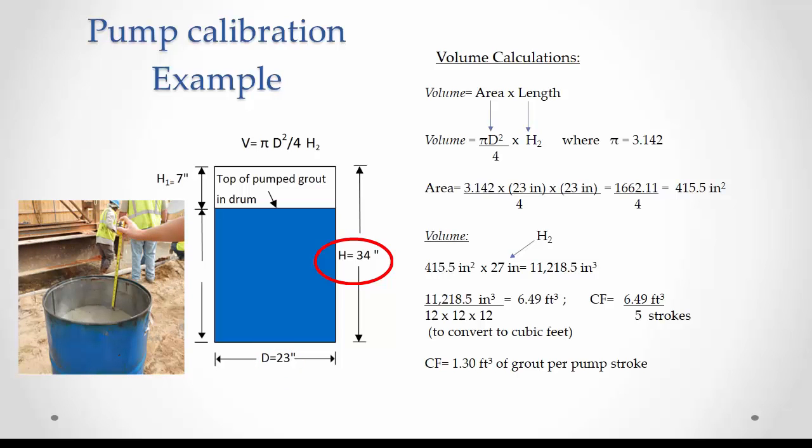At the end of the pumping, he has counted five strokes and the clear distance between the top of the grout and the top of the barrel was 7 inches. Now he can determine H sub 2 equals 34 minus 7 inches equals 27 inches.